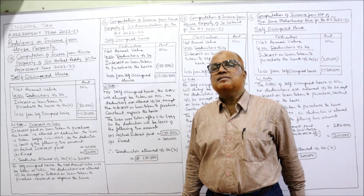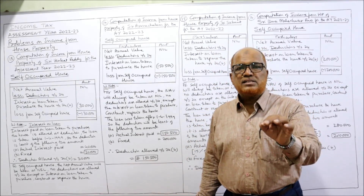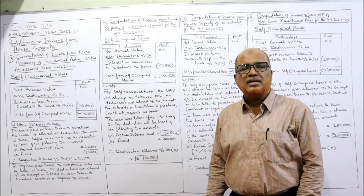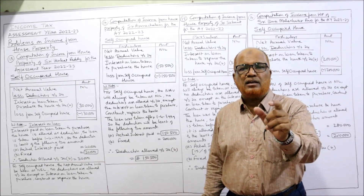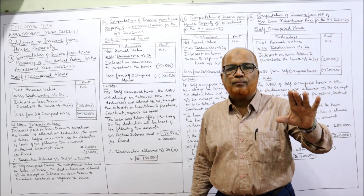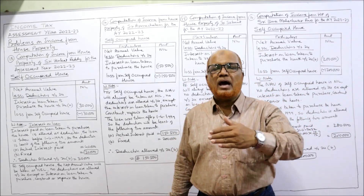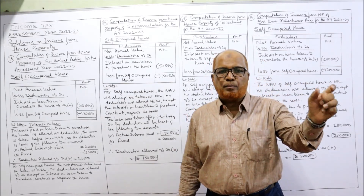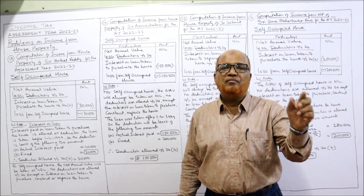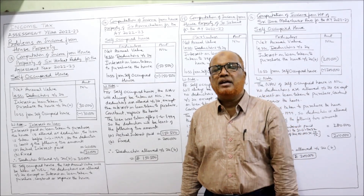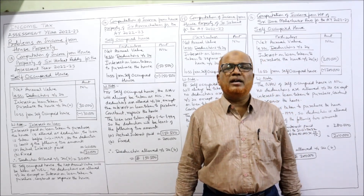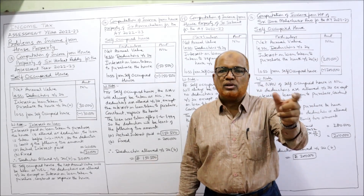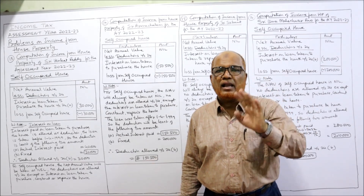However, the Income Tax Act provides that if the loan is taken before 1st April 1999, interest on the loan will be allowed as a deduction to the least of the following two amounts: actual interest paid, or ₹30,000 — a fixed ceiling limit given by the Income Tax Act. Actual interest paid or ₹30,000, whichever is less, will be allowed as deduction.